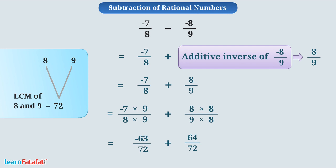Once denominators are same, we can add them. Is equals to minus 63 plus 64 upon 72. Which is equals to 1 upon 72. So the result of given problem is 1 by 72.